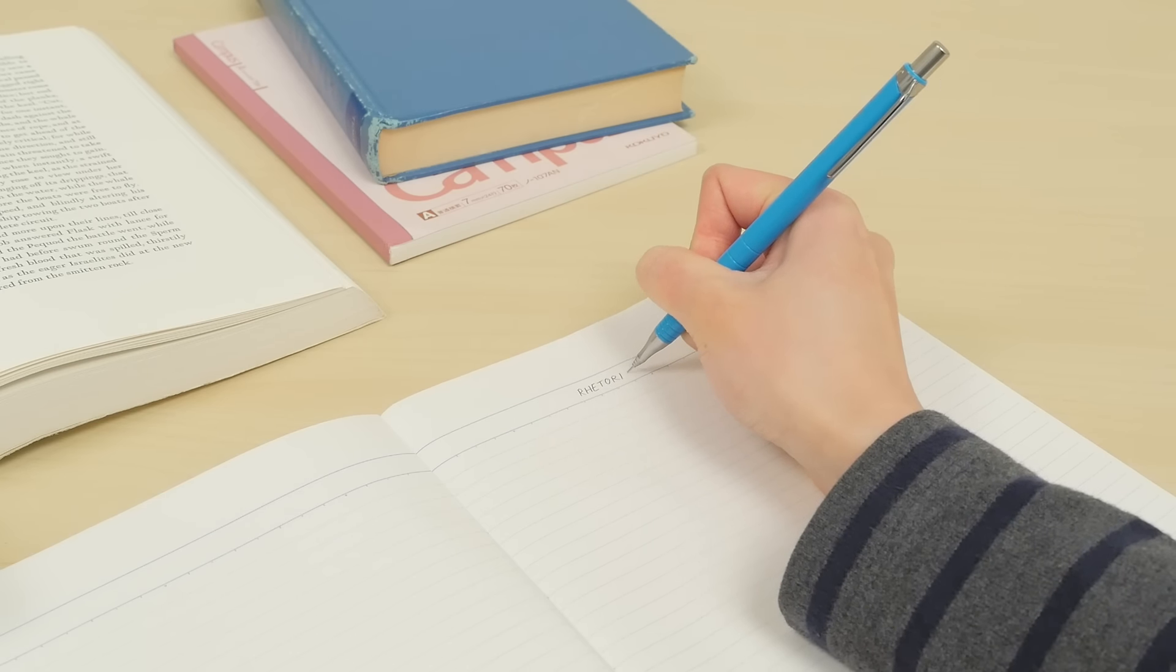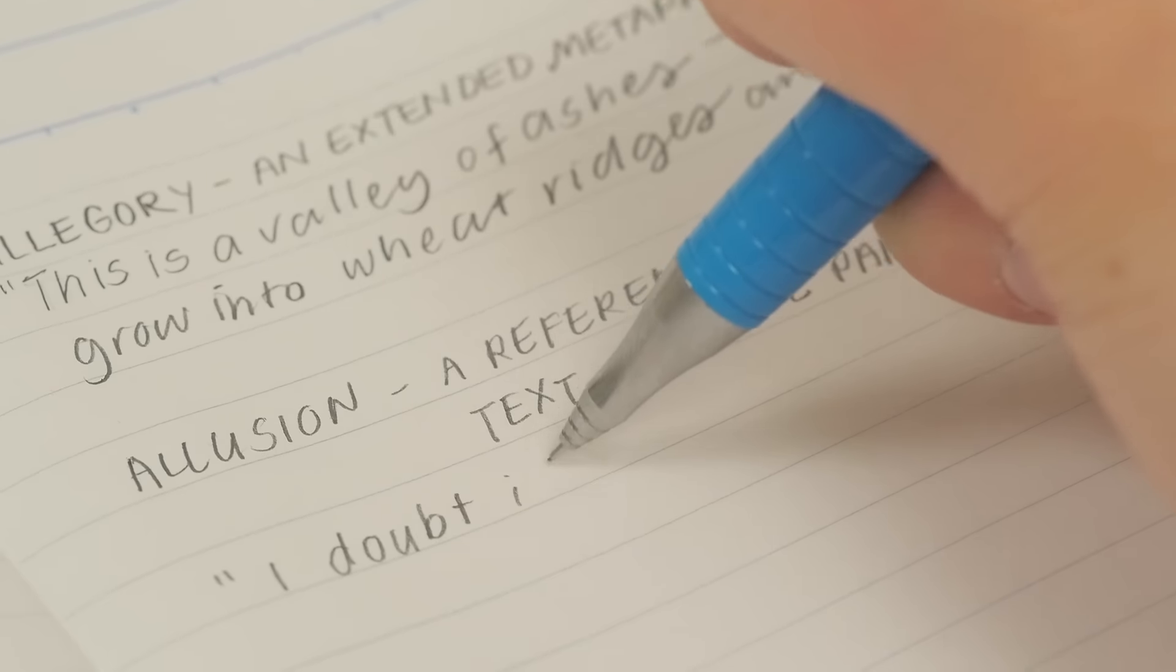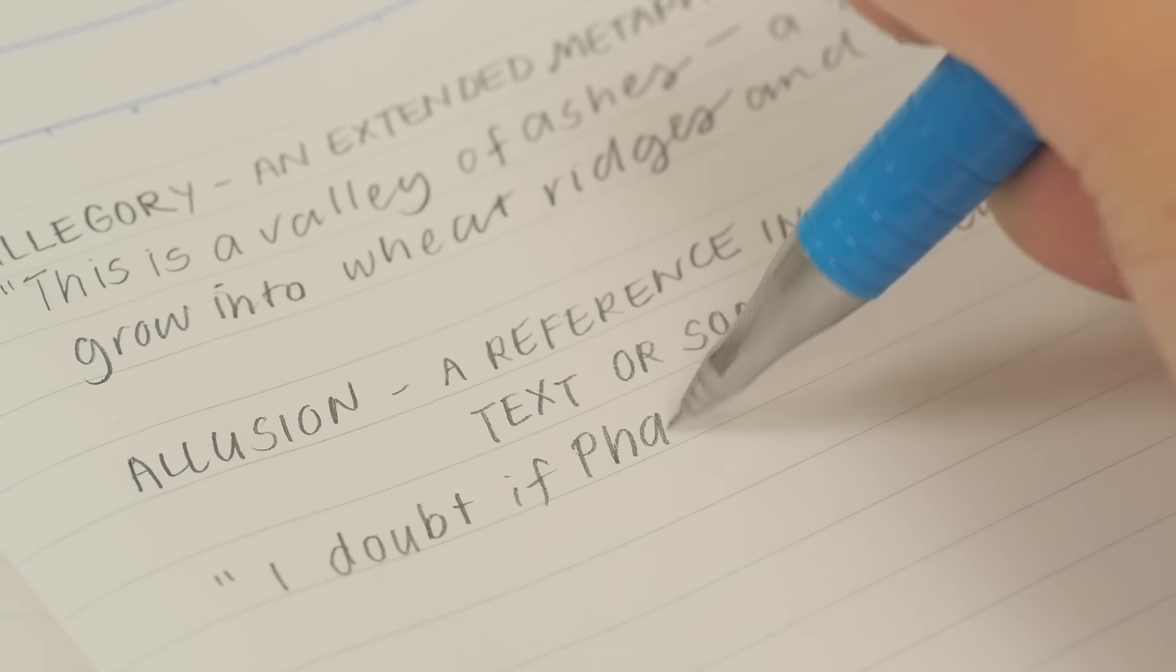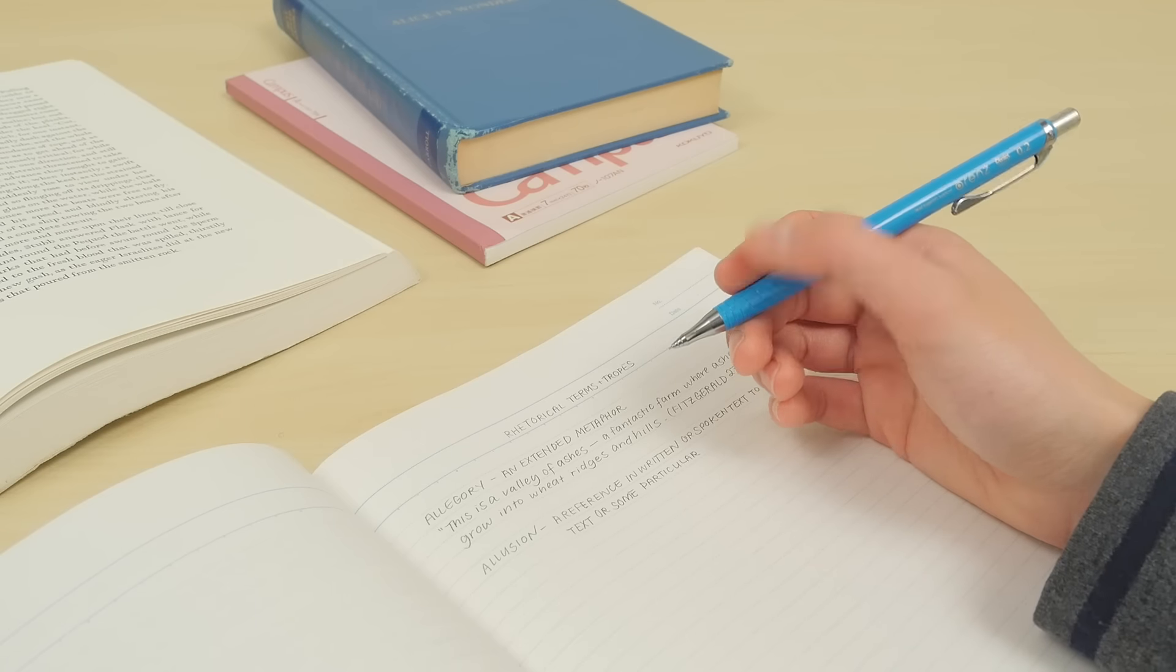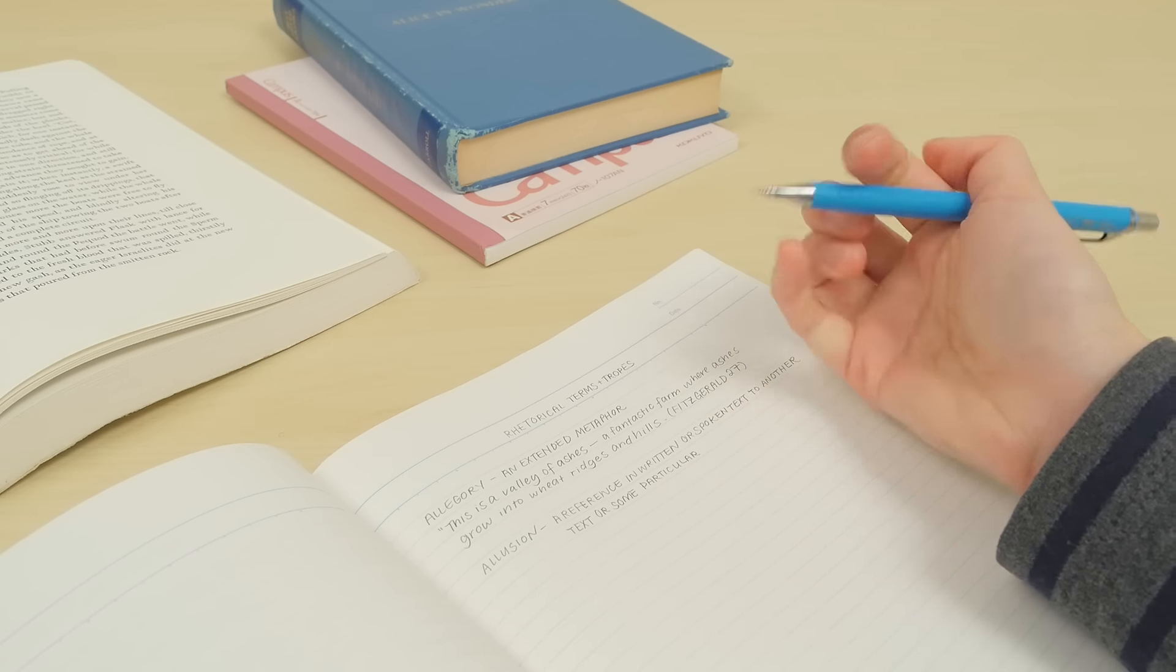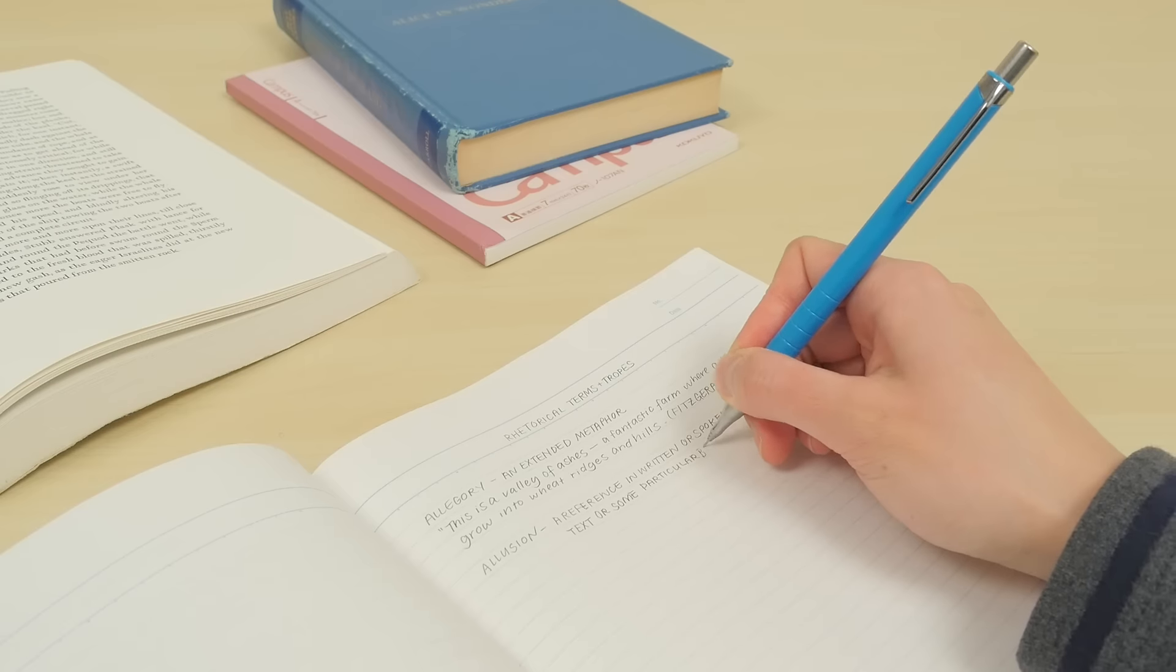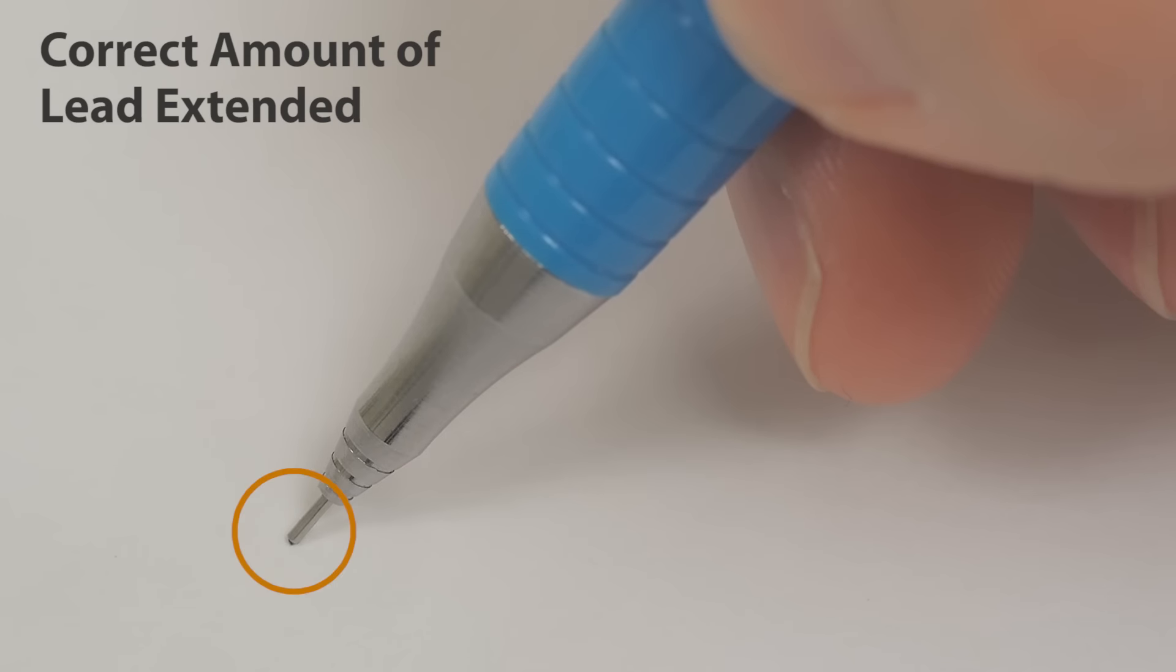The lead pipe will get shorter when you need more lead. Simply click the top button like any other mechanical pencil. Only a tiny bit of lead will show through the guide pipe.